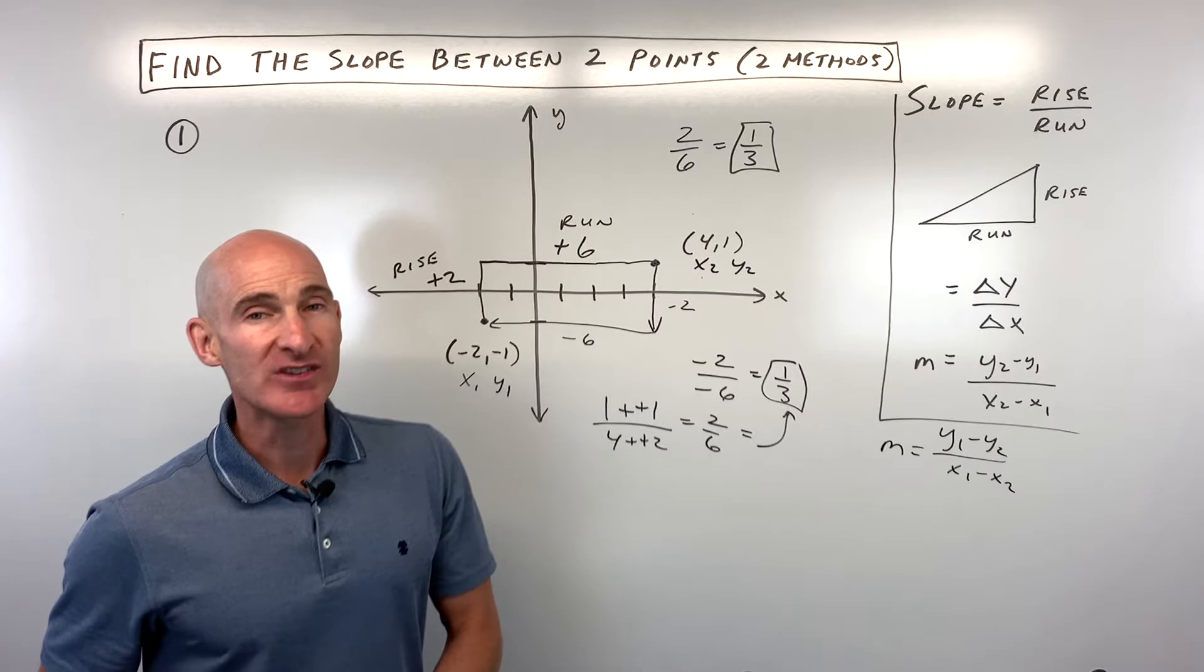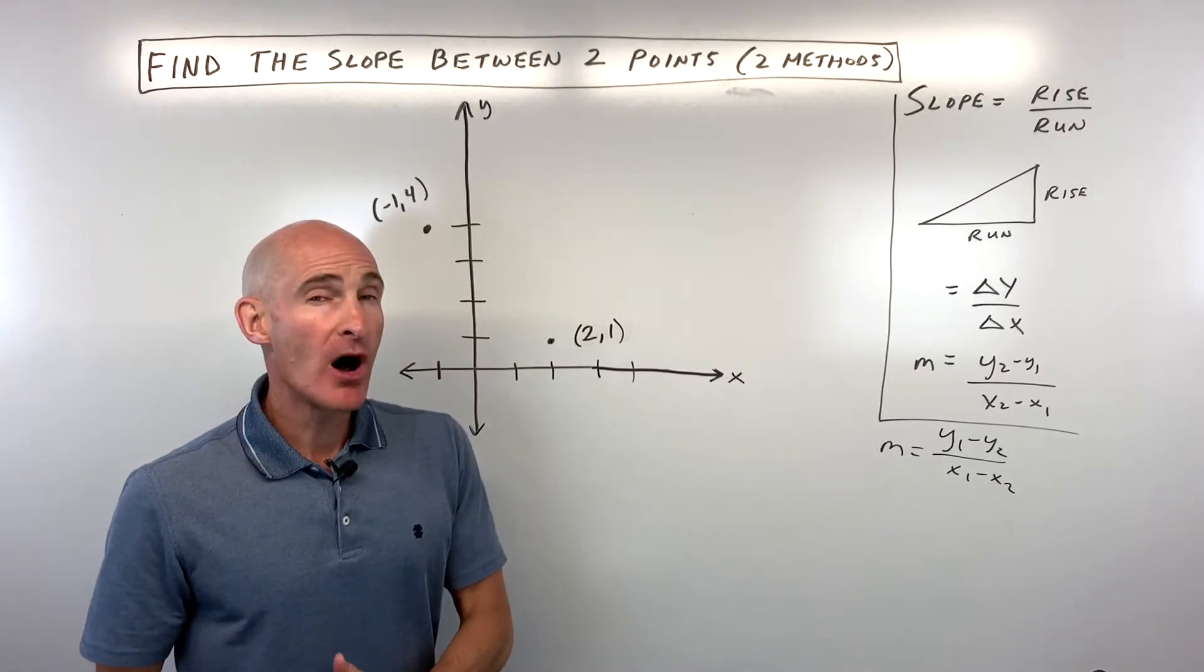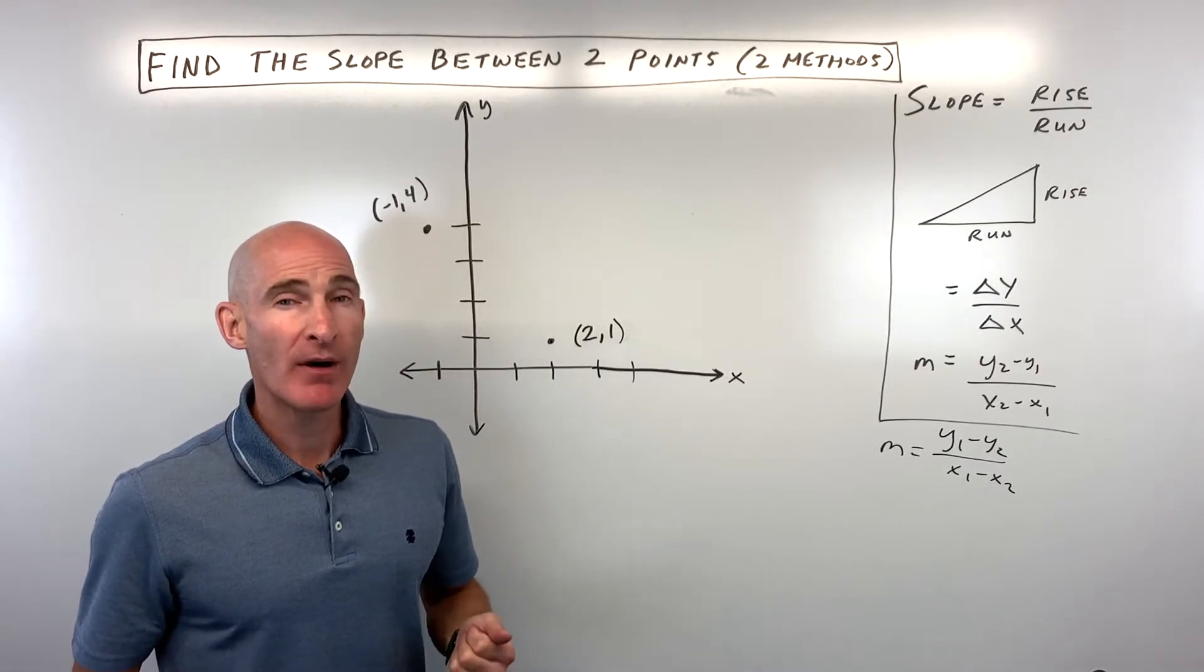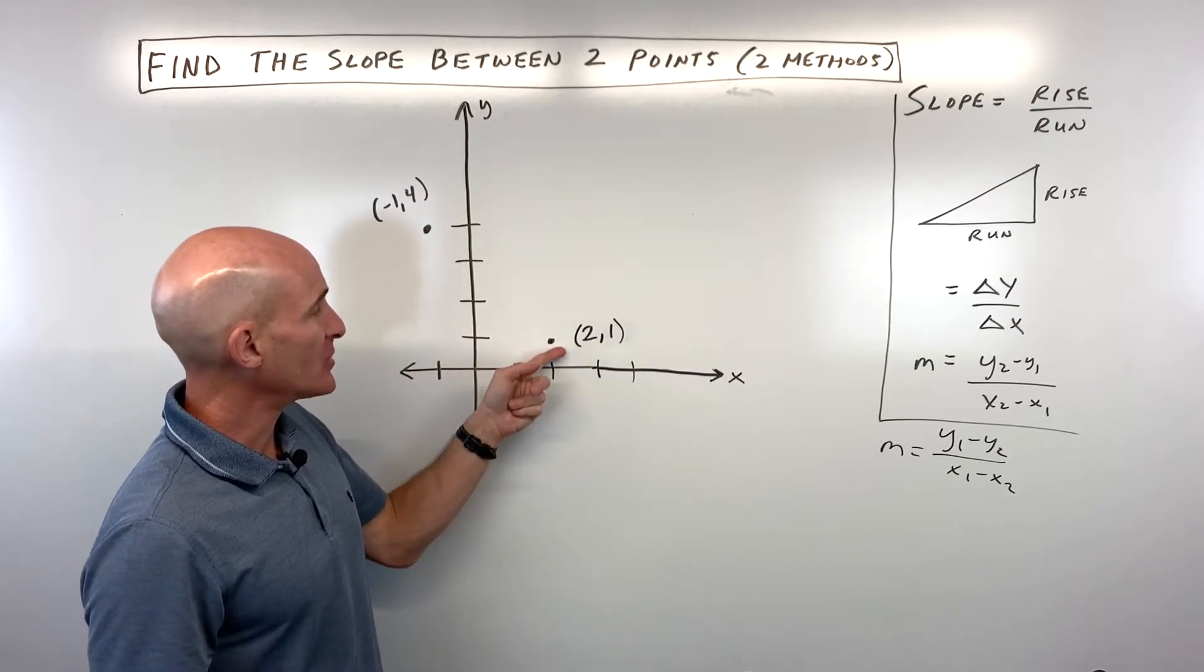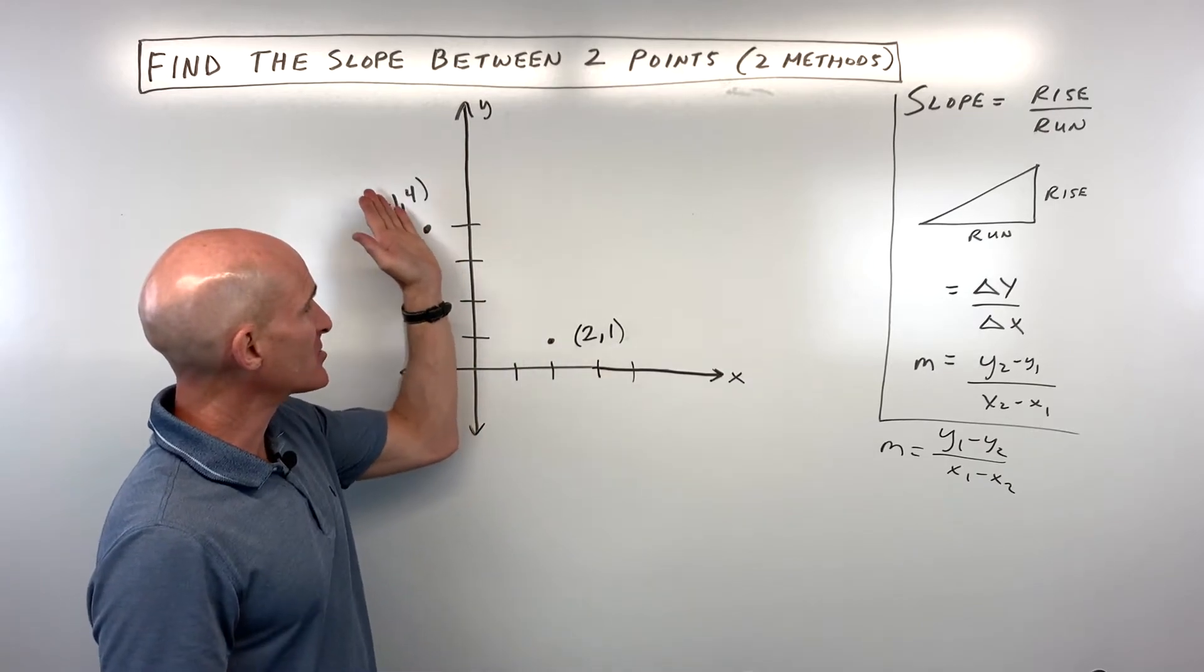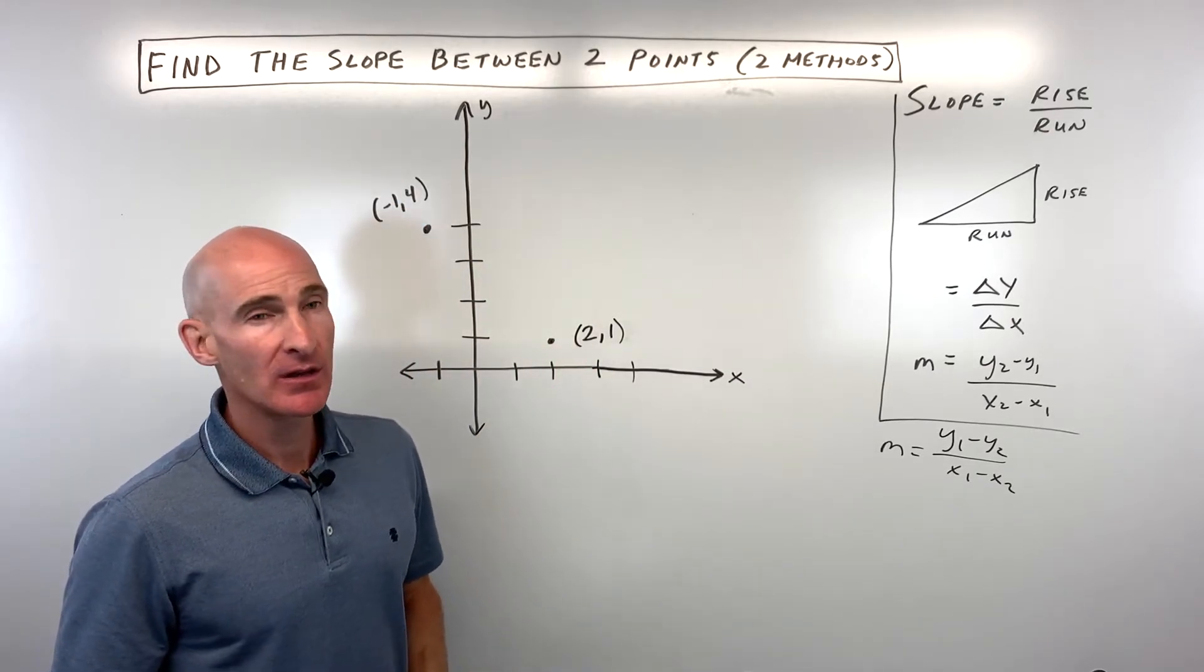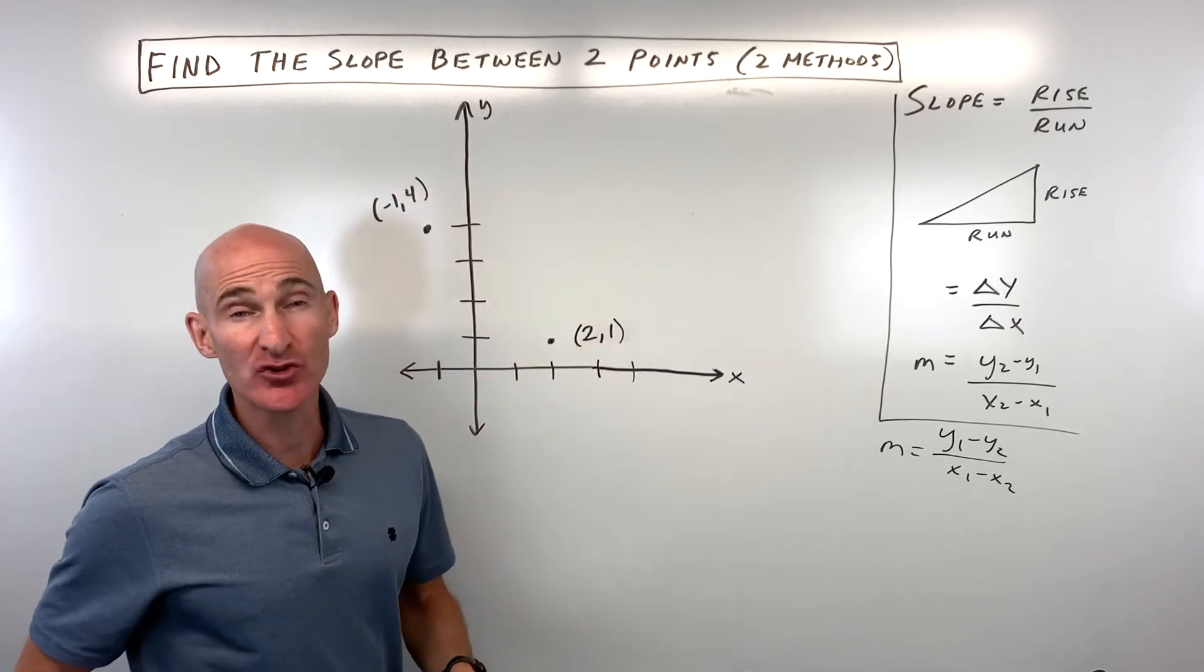Let's take a look at another example. See if you can pause the video and do this problem on your own and we'll go through it together. So we're given this point negative 1, 4 and 2, 1. How can you find the slope of the line that goes through those two points?